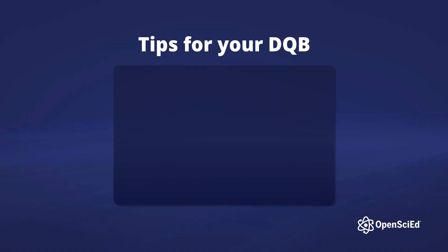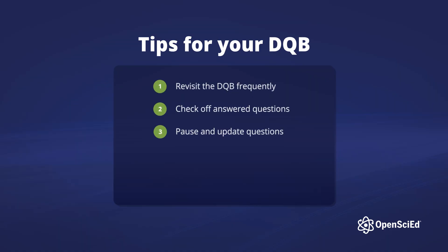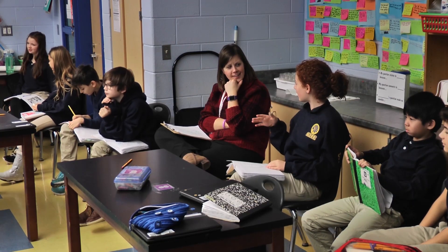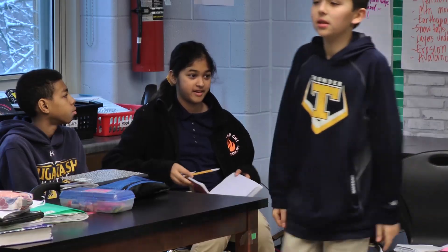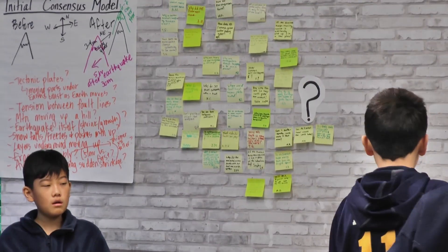To get the most from your DQB, revisit it. Check things off. Have students pause and update questions with what we've figured out. Let students lead. If it looks messy by the end of the unit, that's a sign it's working. When students see their thinking move the whole class forward, they start caring about everyone's learning, not just their own.